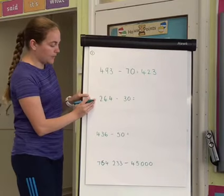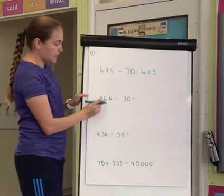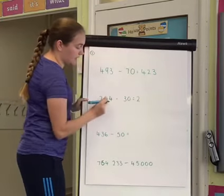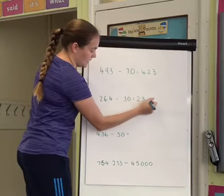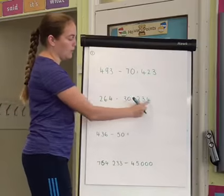This one is another similar one. It doesn't bridge the tens. So I'm looking for my tens digit is going to change. My 3 is less than my 6. So again, I can do that really quickly. 6 take away 3 is 3. So the answer is going to be 234. And the hundreds and the ones are not going to change.